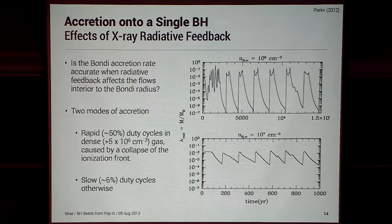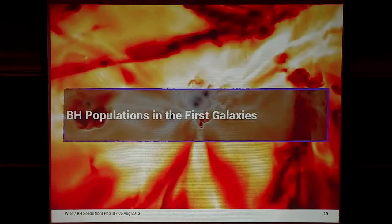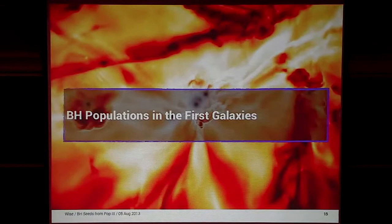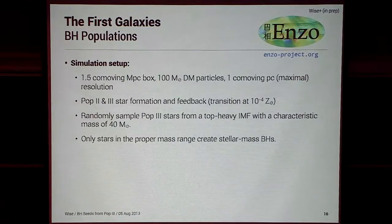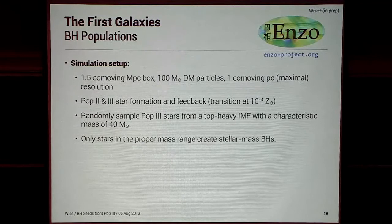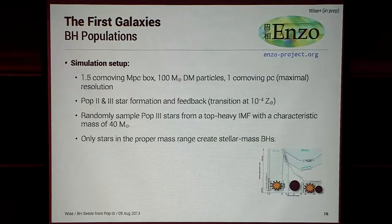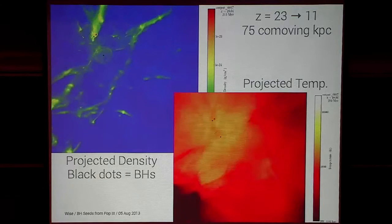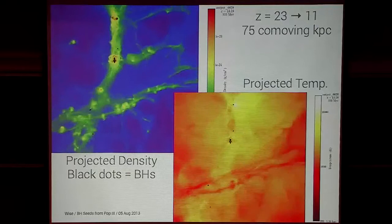Now I want to switch gears to more massive halos and how these black holes congregate in the first galaxies. The first simulation is a small-scale 1.5-megaparsec box with a dark matter resolution of 100 solar masses and spatial resolution of 1 co-moving parsec. We include Pop II and Pop III star formation, randomly sampling from an IMF with a characteristic mass of 40 solar masses, giving a good mix of metals and black hole seeds. Density and temperature projections show multiple black holes in these galaxies, preheating the IGM as their HII regions grow.